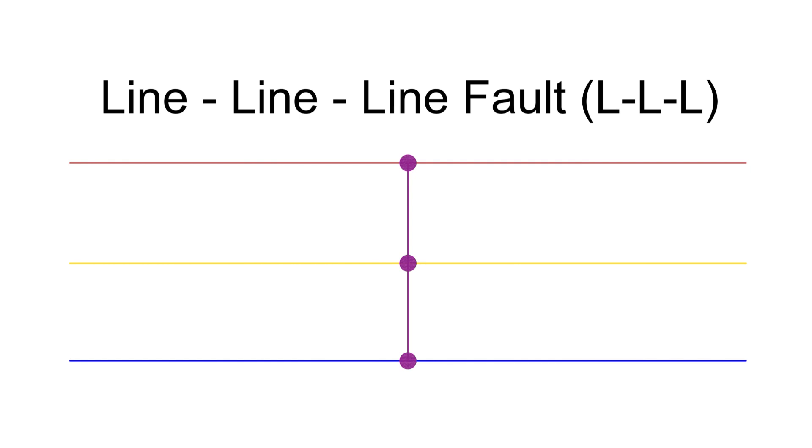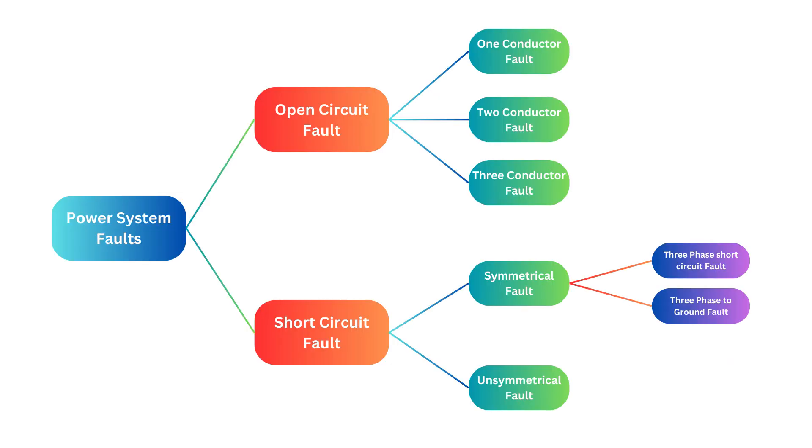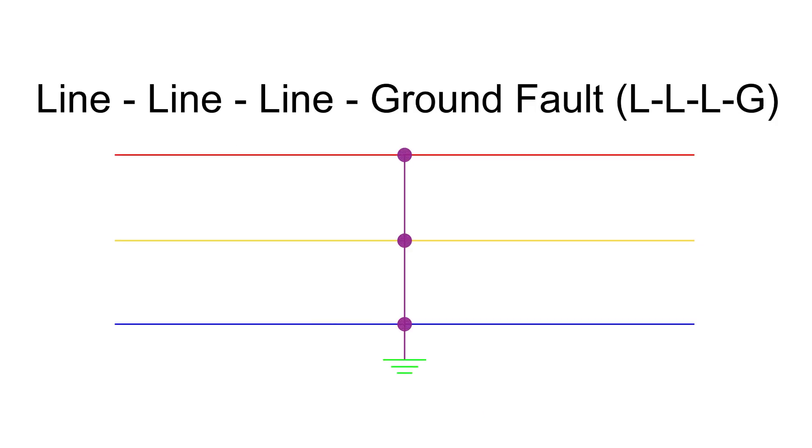Three-phase line-to-ground fault occurs when all three phases come in contact with the ground. It has a probability of 2-3%.